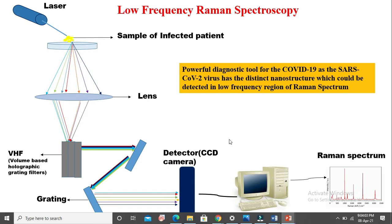If these bands match with the bands of the coronavirus, it indicates that the person is COVID positive. If these bands do not match, we can say that the person is COVID negative. So from this spectroscopy we can detect COVID positive and negative.